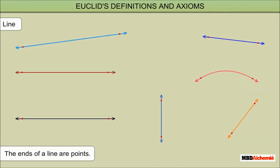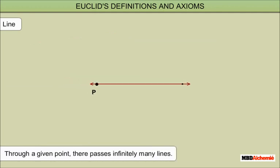The ends of a line are points. Through a given point, there passes infinitely many lines.